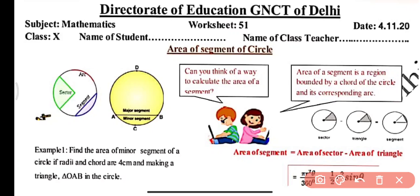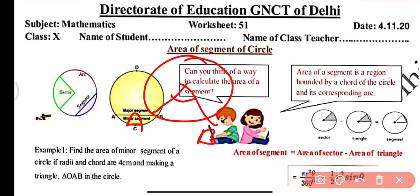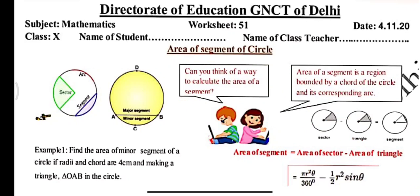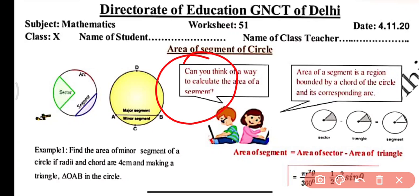If the angle at the center (theta) is less than or equal to 90 degrees, we find the area of the triangle using the formula ½r²sinθ. Keep in mind: whenever the angle at the center is less than or equal to 90 degrees, we will use the formula ½r²sinθ.